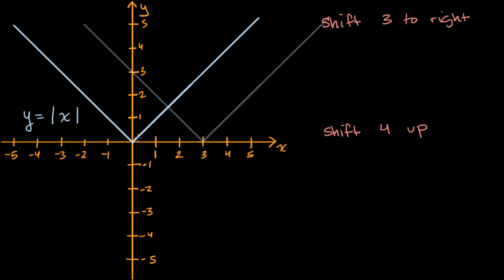Before, that interesting thing was happening at x equals zero. Now it's happening at x equals three. And the interesting thing that happens here is that you switch signs inside the absolute value. Instead of taking an absolute value of a negative, you're now taking the absolute value as you cross this point of a positive, and that's why we see a switch in direction here of this line. So you see the same thing happening right over here. At this point, we know that our equation needs to evaluate out to zero, and this is where it's going to switch signs.